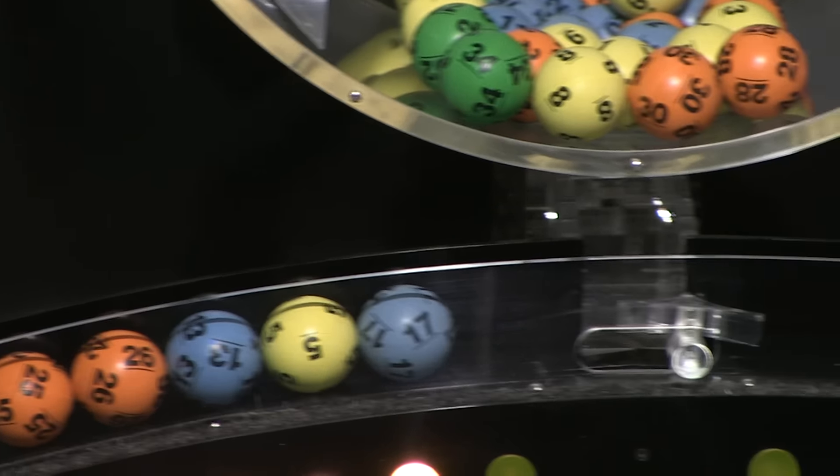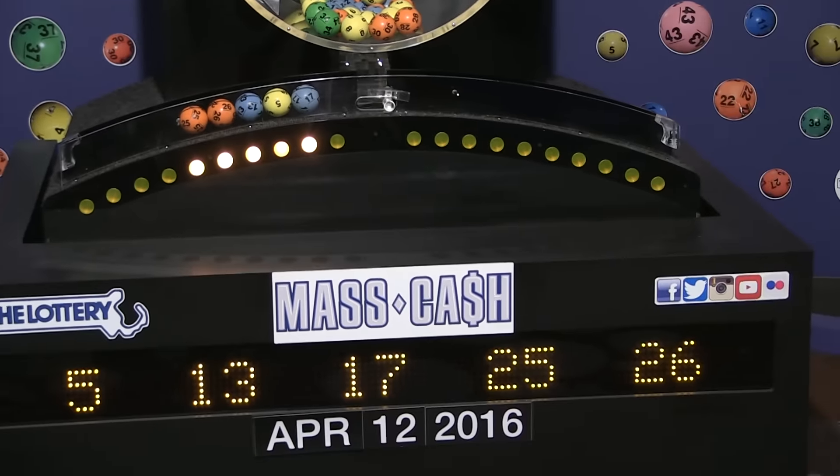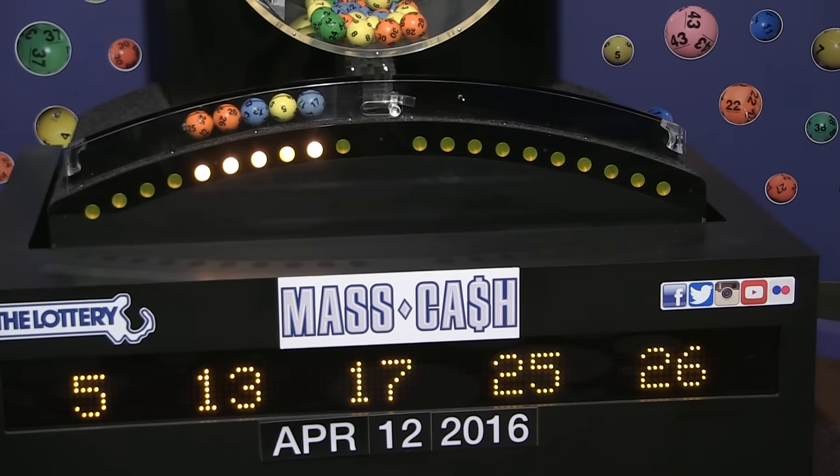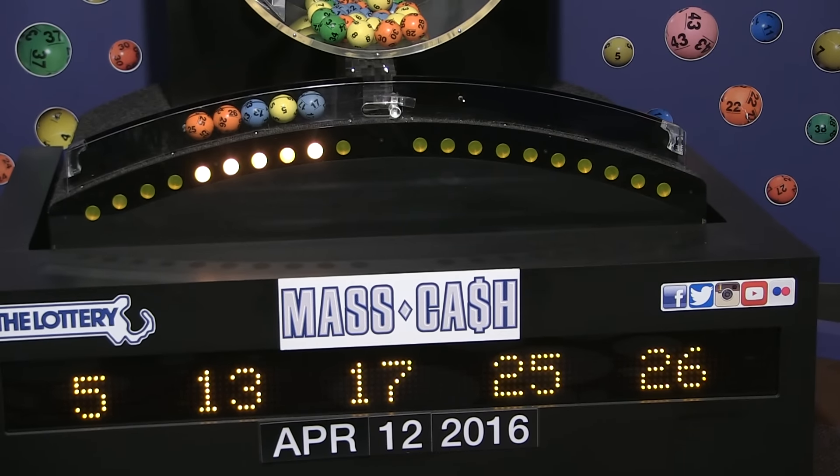Once again, the winning Mass Cash numbers for Tuesday, April 12th are 5, 13, 17, 25, and 26. Remember to log on to masslottery.com, Facebook, and Twitter to watch all of the Massachusetts Lottery's drawings. Good night.